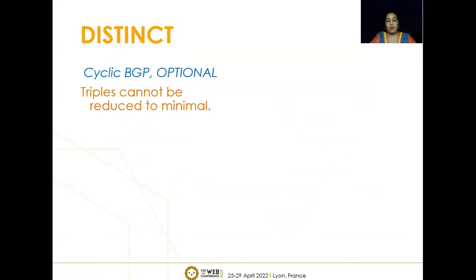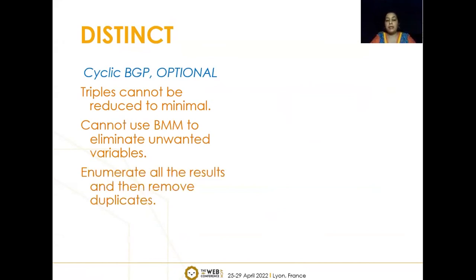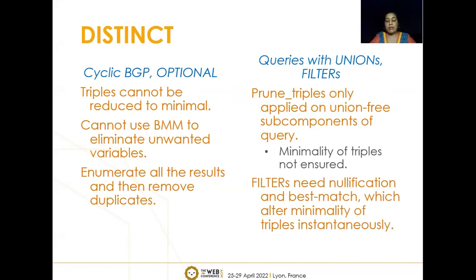For cyclic BGP optional queries, we cannot ensure that triples can be reduced to minimal, so we cannot use Boolean matrix multiplication to eliminate unwanted variables and must resort to the standard method of first enumerating all results and then removing duplicates. For queries with unions and filters, Boolean matrix multiplication also cannot be used. When prune triples is applied only on union-free subcomponents, minimality of triples across the entire query is not guaranteed. For filters, nullification and best match may alter minimality, and to use the distinct algorithm we must ensure that triples associated with all triple patterns are minimal.